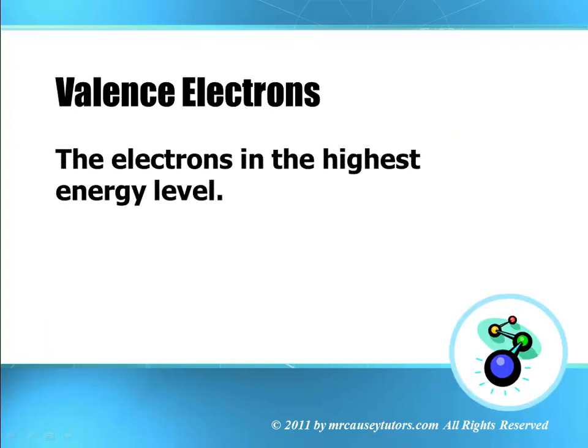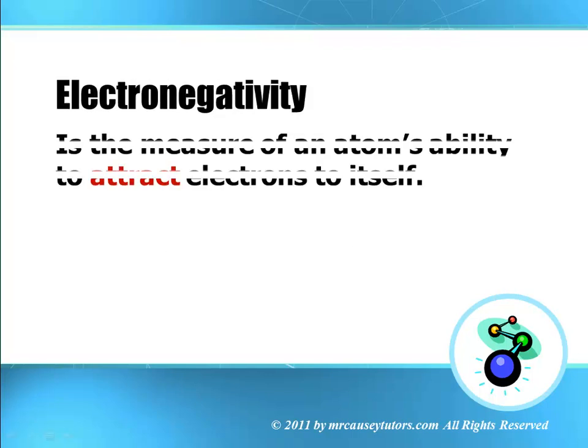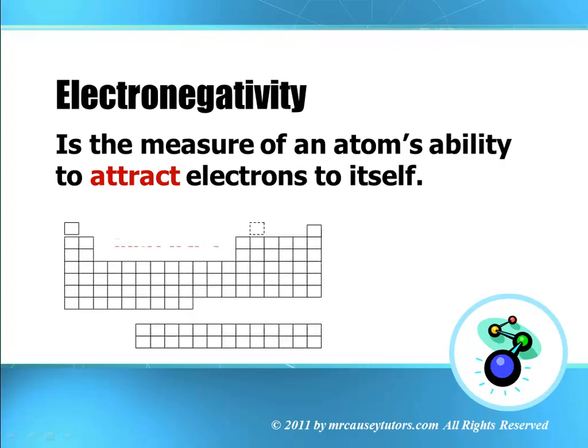Here we go. Here's some review. Valence electrons are the electrons in the highest energy level and usually the S and P. Electronegativity is the measure of an atom's ability to attract electrons to itself and increases as you go across and as you go up. And that excludes the noble gases though.